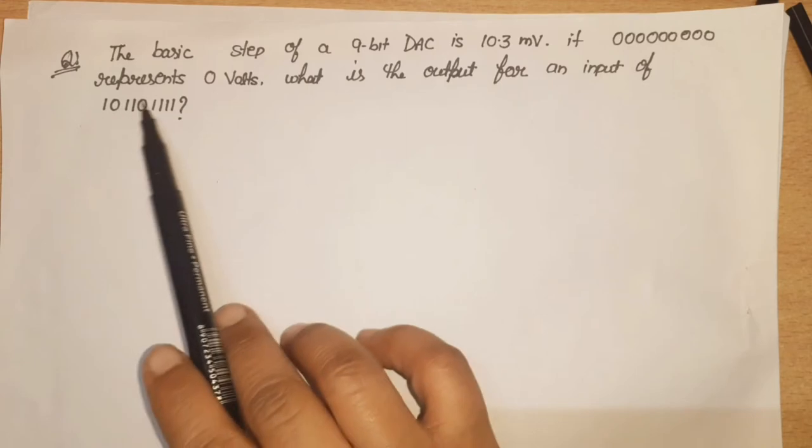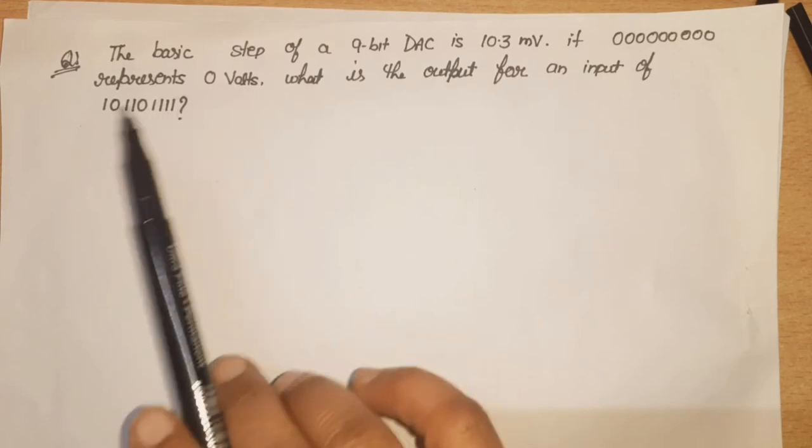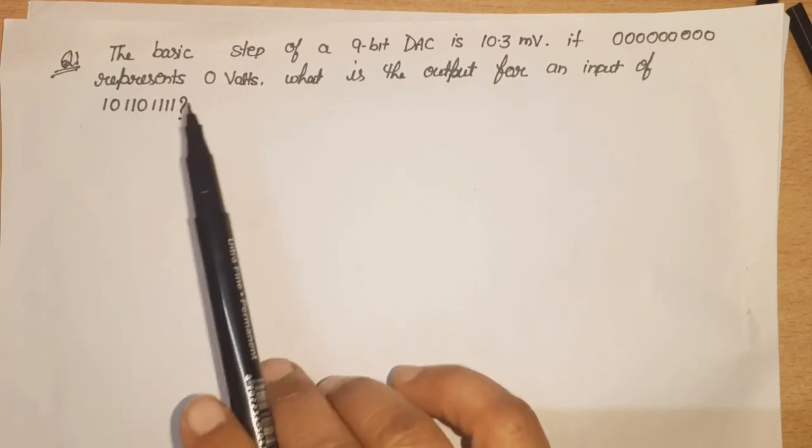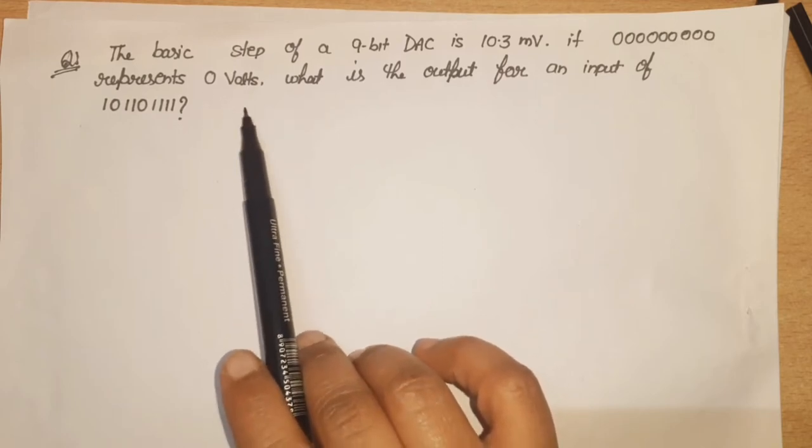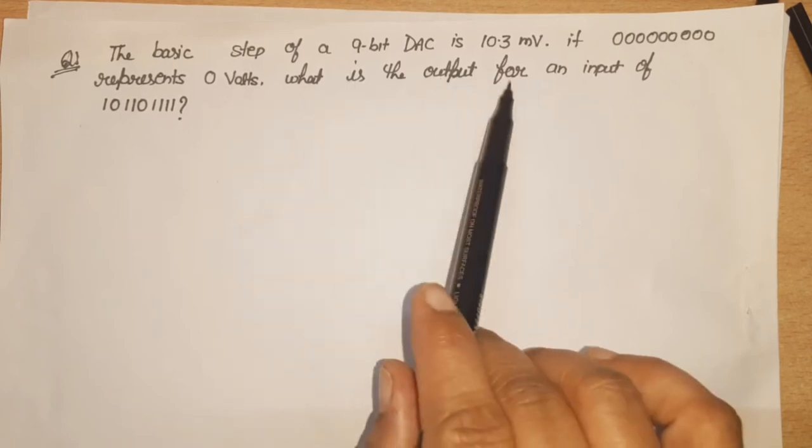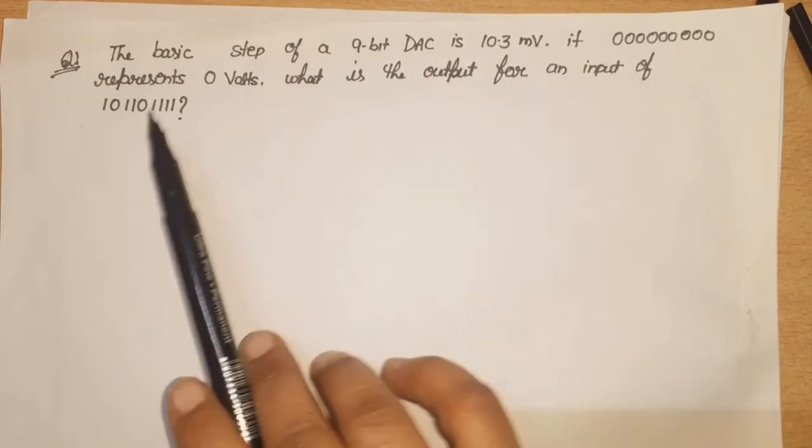The basic step of a 9-bit DAC is 10.3 mV. If this is the sequence, if all bits are equal to 0, it represents 0 volt. Means that if all bits are 0, then this voltage is equal to 0 volt.